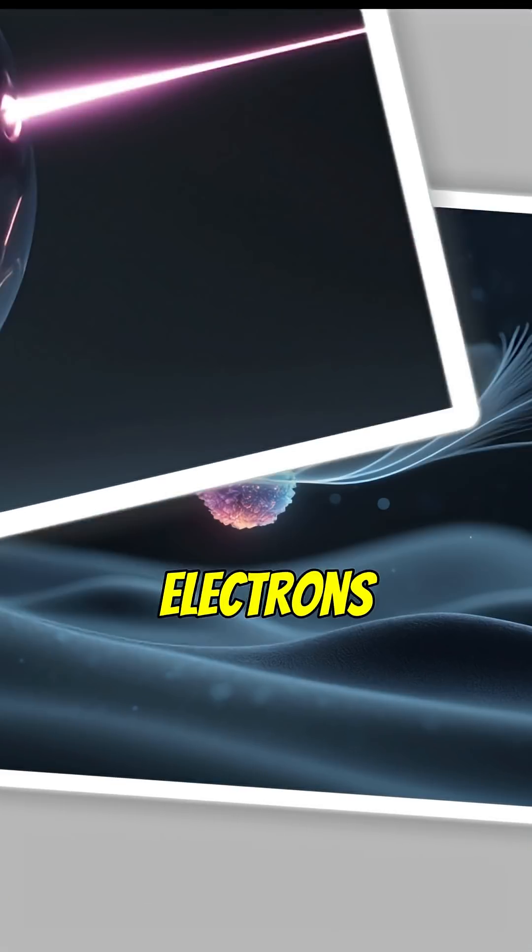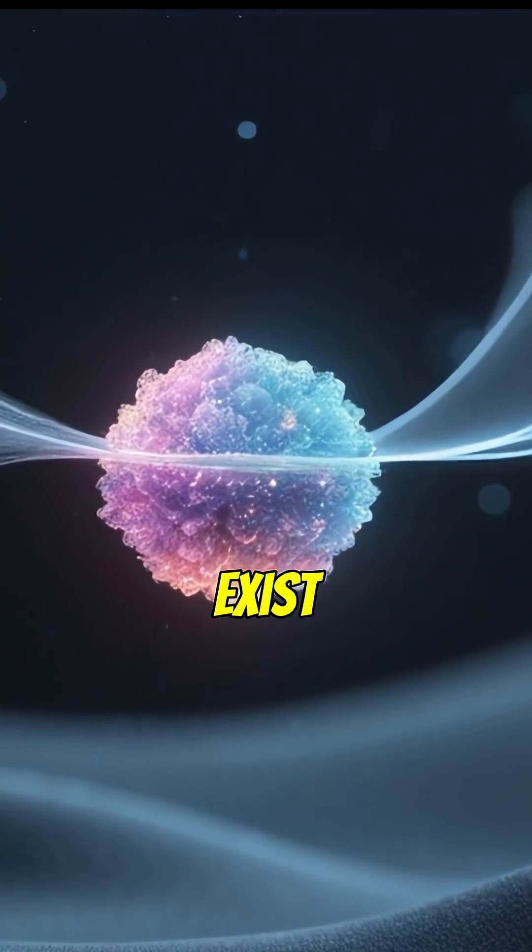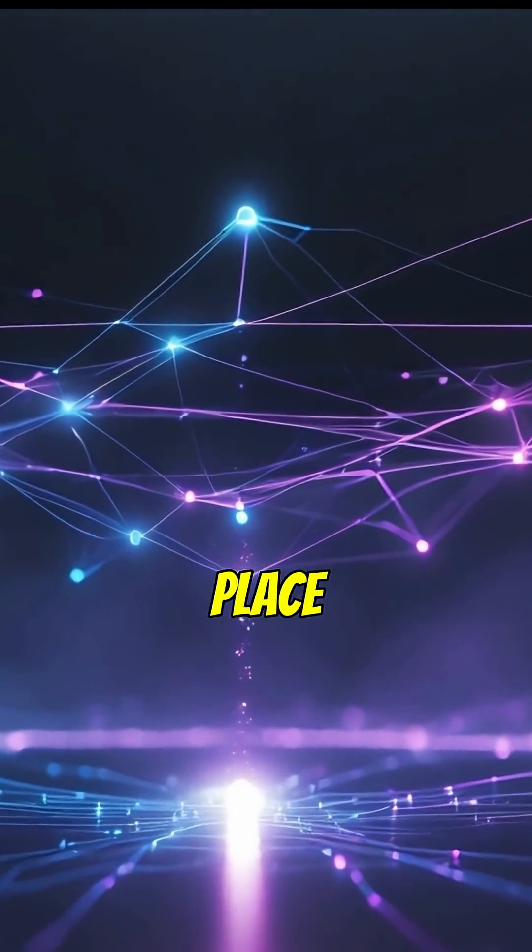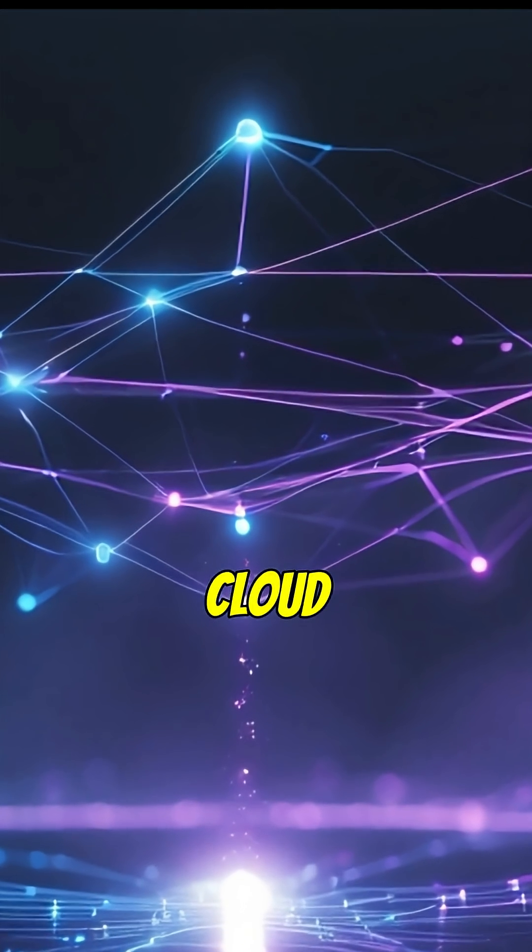Quantum particles like electrons or photons don't sit still. They exist as waves of possibilities. A particle isn't in one place. It's spread out, like a cloud of probabilities.